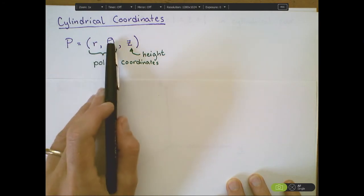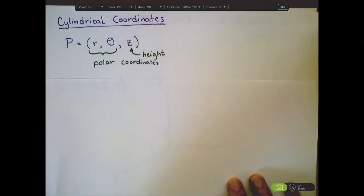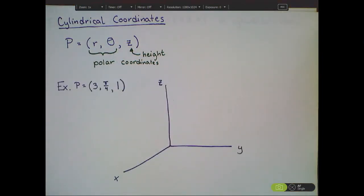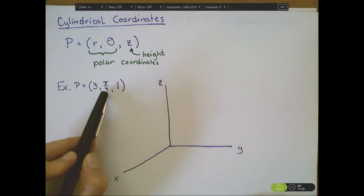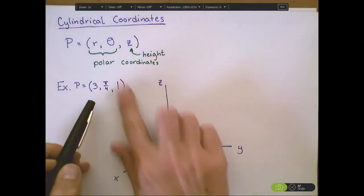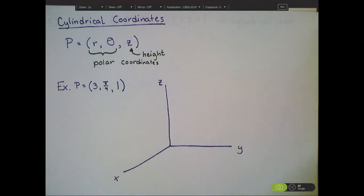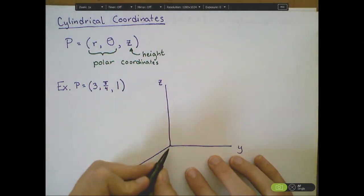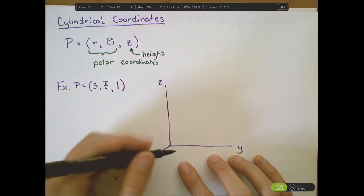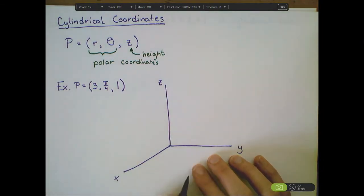And the angle theta here measures the angle traced out with the x-axis. So for example, if I'm looking at the point, I can think of 3 and pi over 4 as being my coordinates down in the xy-plane that are polar coordinates. So just like before, I'm going to make an angle of pi over 4 with the x-axis.